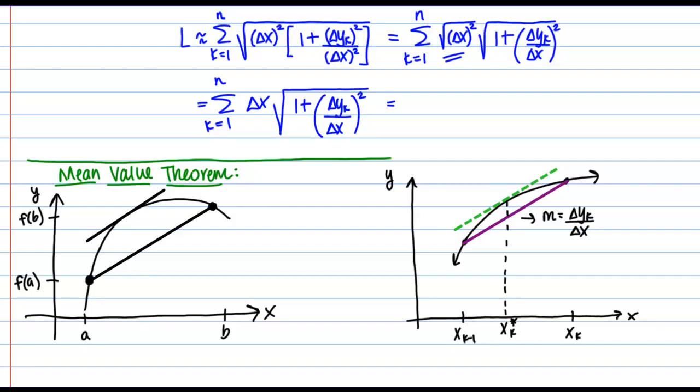So what this allows me to do is actually rewrite this expression as delta x times the square root of 1 plus—and I can rewrite this delta y sub k over delta x as f prime of x_k star squared. Because recall that the derivative is the slope of the tangent line. So now we have everything in terms of x, which is nice.